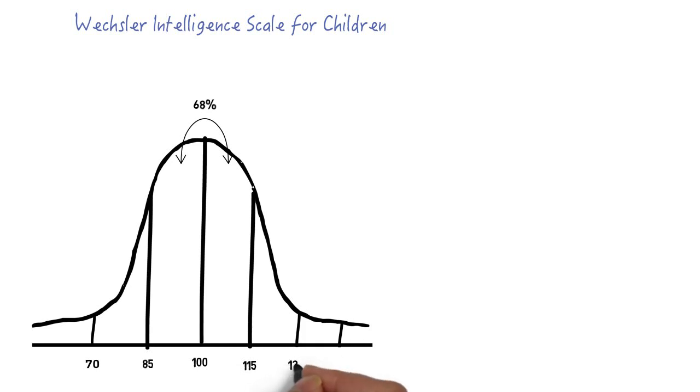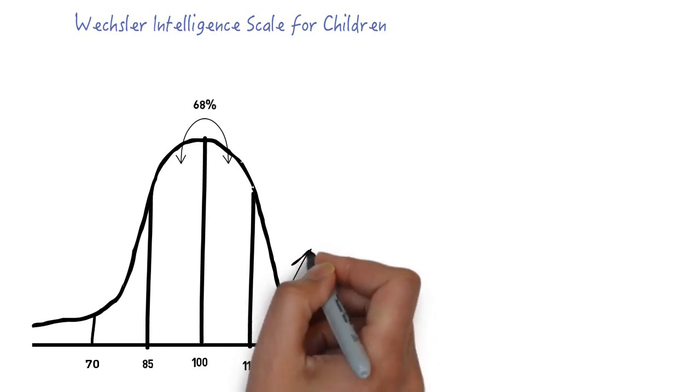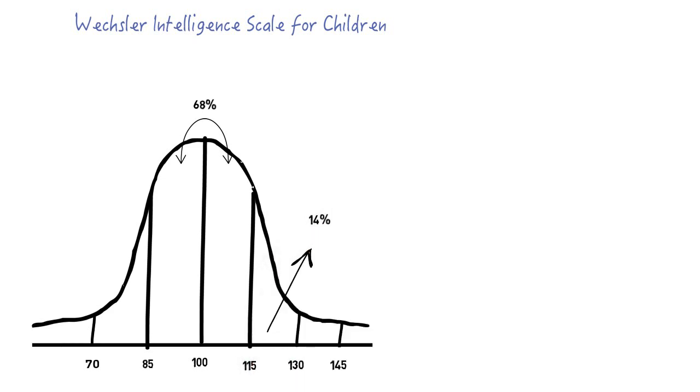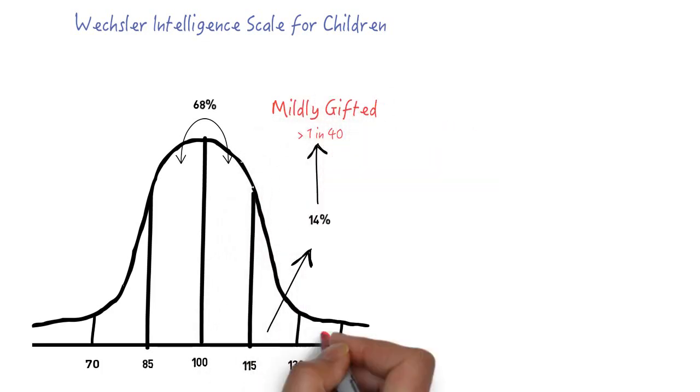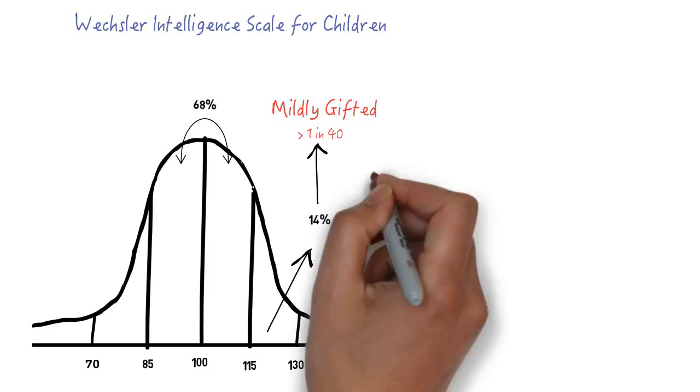Schools on average cater best for these students. Approximately 14% have an IQ between 115 and 130. This group is referred to as mildly gifted. 2% of people have an IQ between 130 and 145, and this group is referred to as moderately gifted.